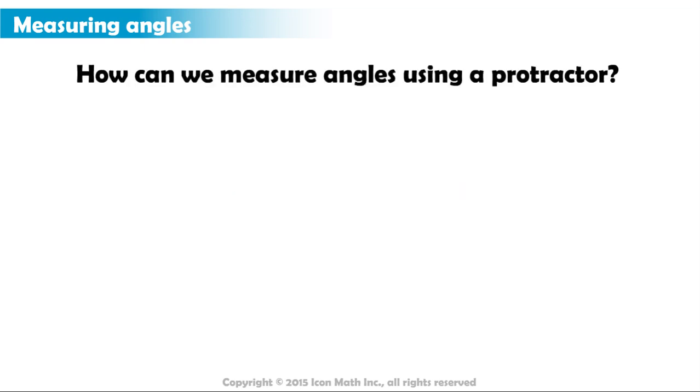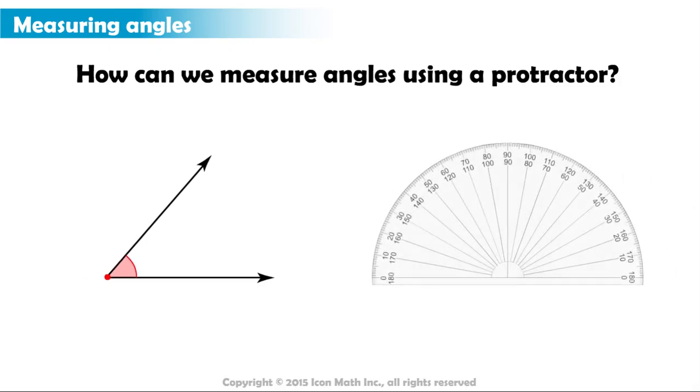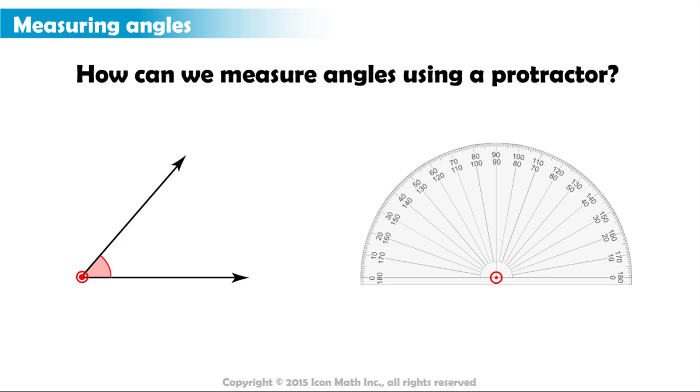Now, how can we find the number of degrees for an angle? First, we have to align it with our protractor so that one of the rays forms a straight line between the center and the zero point of the protractor. Note that the center point of the protractor must be exactly on top of the vertex of our angle.